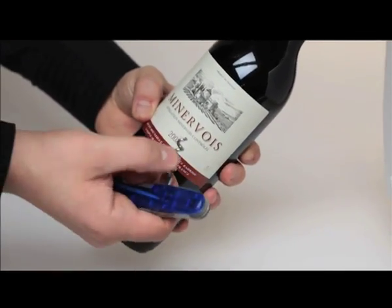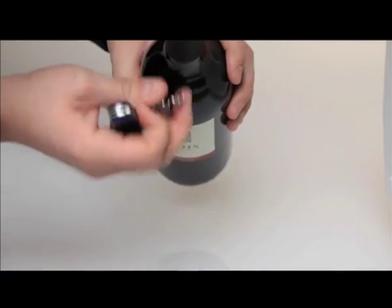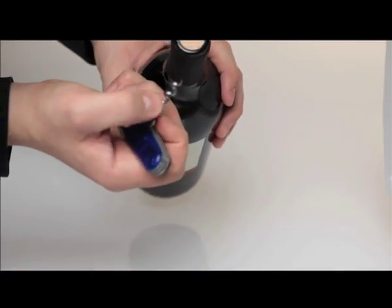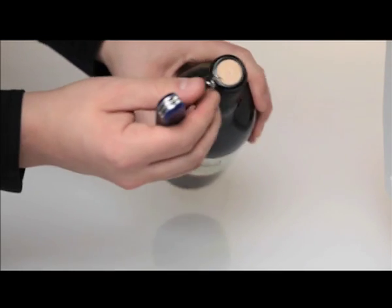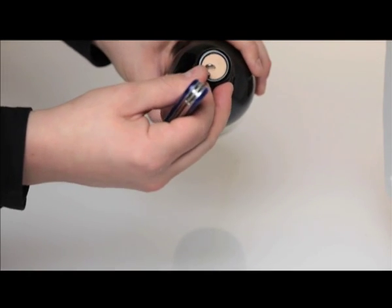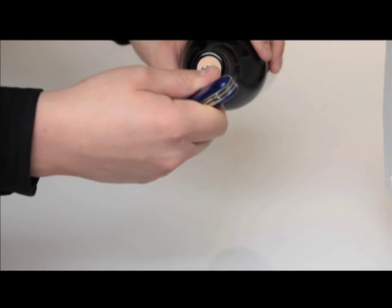Now that we have our corkscrew and our cheap bottle of red wine, the easiest part is to actually get the screw into the cork. Start with just putting the tip to the cork, find the middle of it,